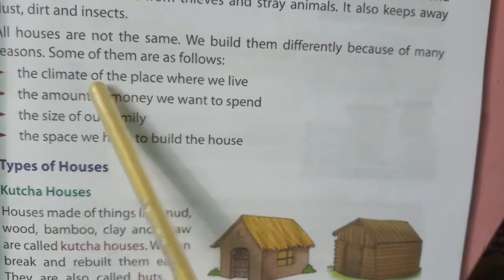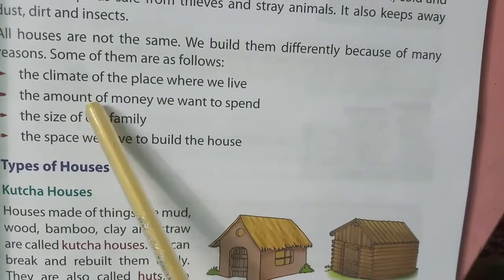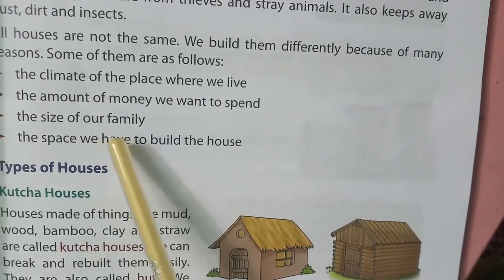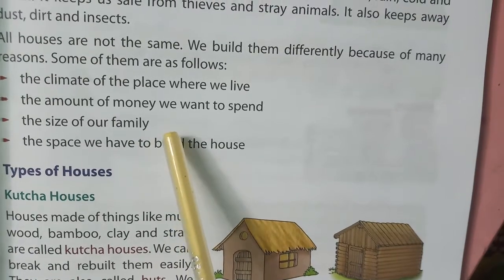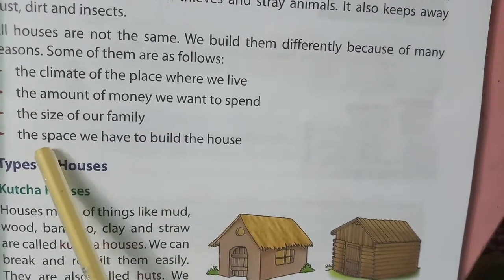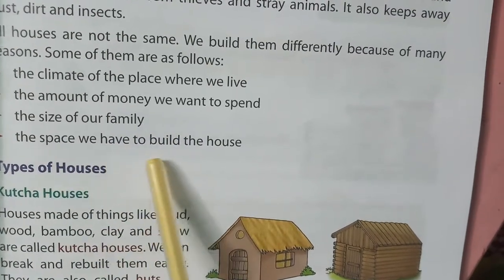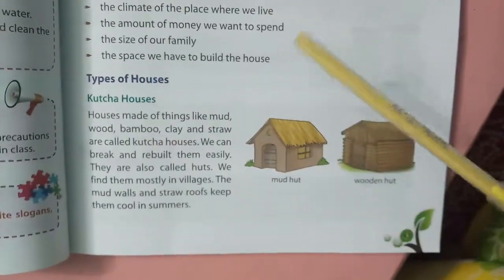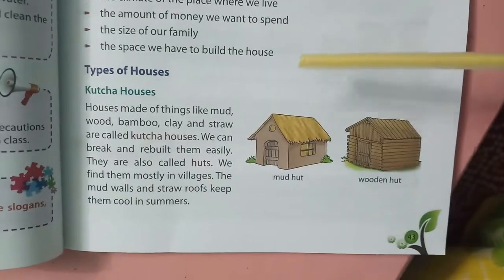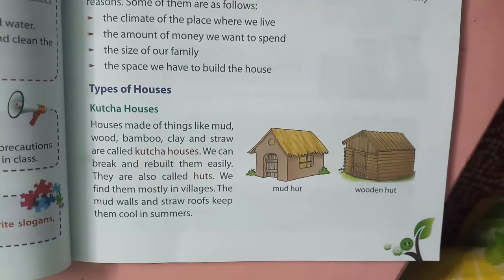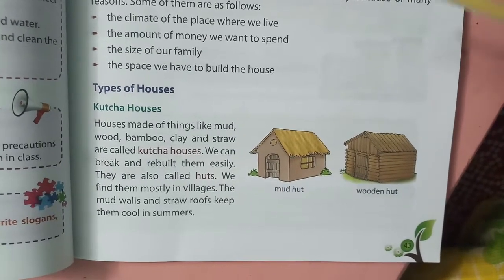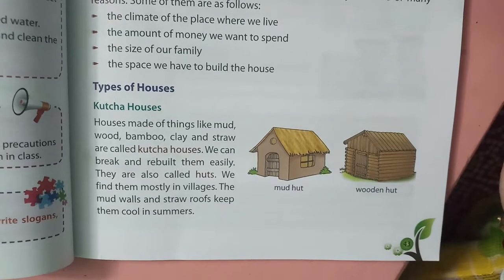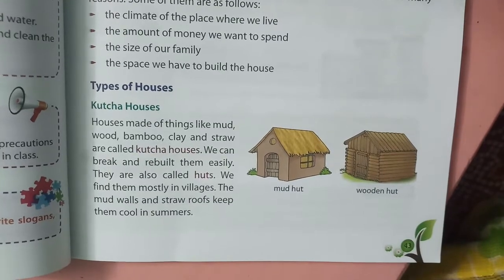Houses are not the same because of many reasons — climate, amount of money, size of family (big family or small family), and the space available to build. In village areas there is enough space, so houses are bigger. But in the city, space is less and most people live in flats.